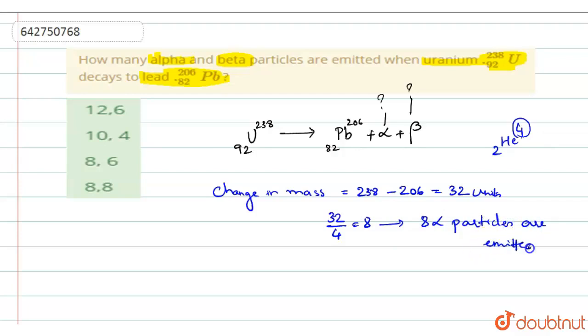In this situation, since there are 32 mass number difference, it means that 8 alpha particles are emitted. Now, with the emission of 8 alpha particles, not only the mass number has changed, there will be change in the atomic number also because you have 2 here. Since you have 2 in the atomic number, between 92 to 82 there is a 10 unit change.